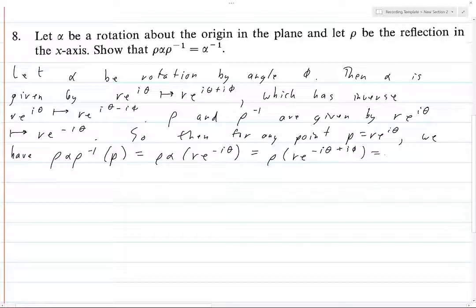And then applying rho again is going to flip the signs. So now it's this, but then we just showed that that's alpha inverse. That's what the map alpha inverse does. It subtracts i phi in the exponent. So hence rho alpha rho inverse equals alpha inverse.